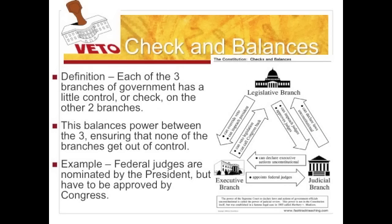The next principle is checks and balances — essentially the balance of power working. Each branch of government checks the other, so they balance the power out. All three branches have a control or check on the other two, ensuring that no branch can get out of control. For example, federal judges are nominated by the president but must be approved by Congress. If the executive branch signs an unconstitutional law into practice, the judicial branch will essentially squash it. Everything has to work in balance.